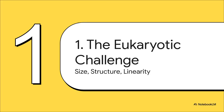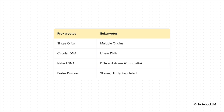Why is eukaryotic replication so much more complicated than what happens in bacteria? It really boils down to three main things: the sheer size of the genome, the fact that our DNA is linear, and that it's all tightly wound up and packaged into something called chromatin. Prokaryotes have it easy — a small, circular, naked piece of DNA with just one single starting point. Eukaryotes, on the other hand, have vast linear chromosomes that have to be carefully unwound from histone proteins before you can even begin. And to copy all that DNA in a reasonable amount of time, we need thousands of starting points, or origins. The whole process is incredibly tightly regulated.